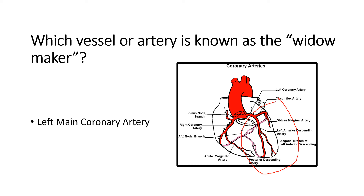To recapitulate: there are two coronary arteries — right and left. The right coronary artery divides into the posterior descending and marginal artery, and supplies the right atrium, right ventricle, inferior wall of the left ventricle, posterior wall of the left ventricle, and posterior one-third of the interventricular septum. The left anterior descending artery supplies the anterior and part of the lateral surface of the left ventricle and the anterior two-thirds of the interventricular septum.